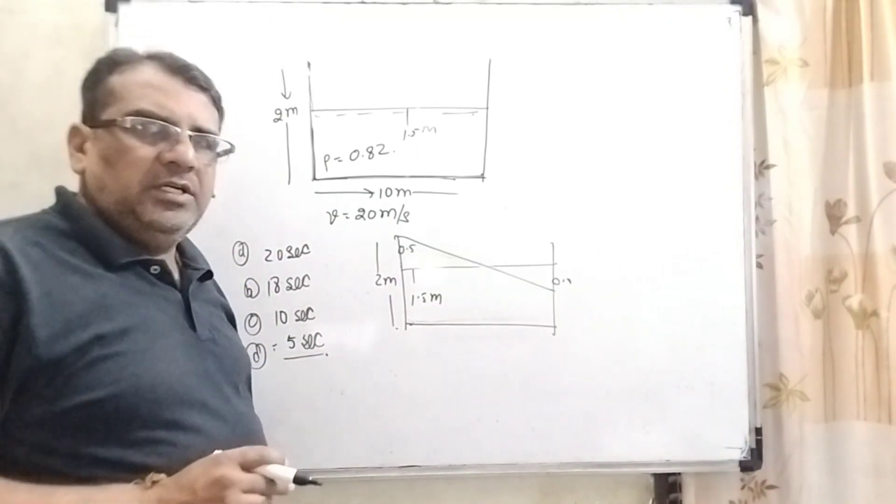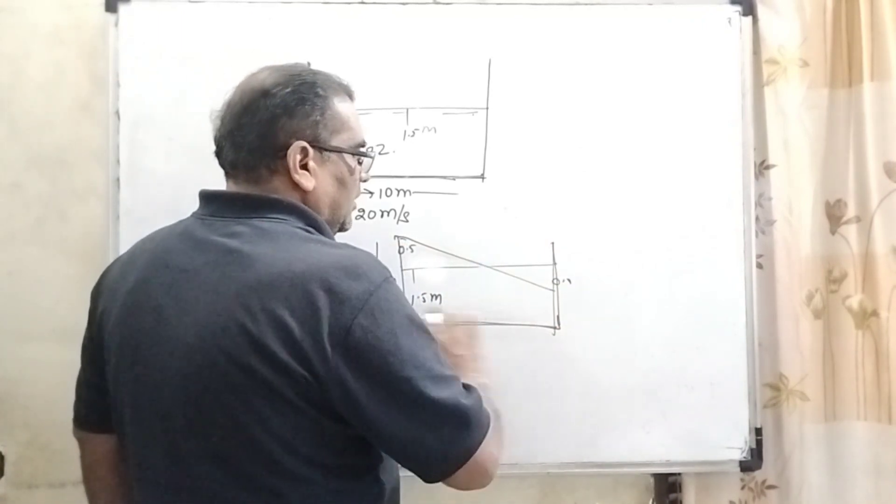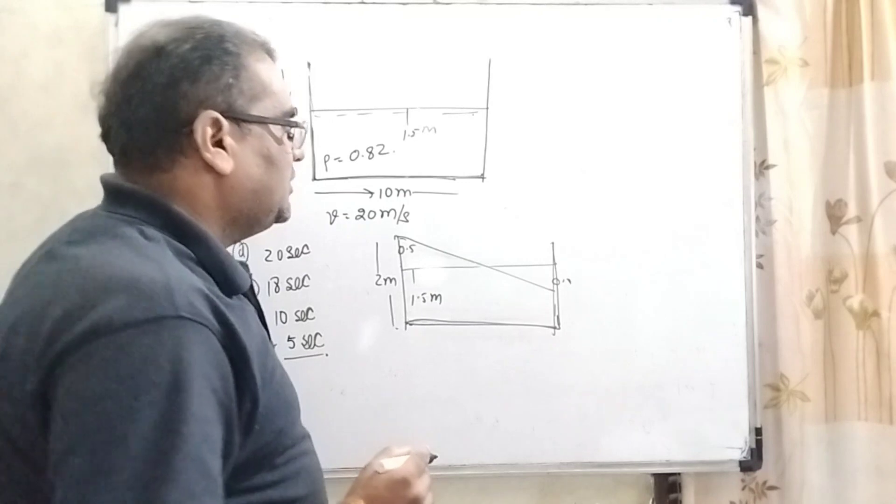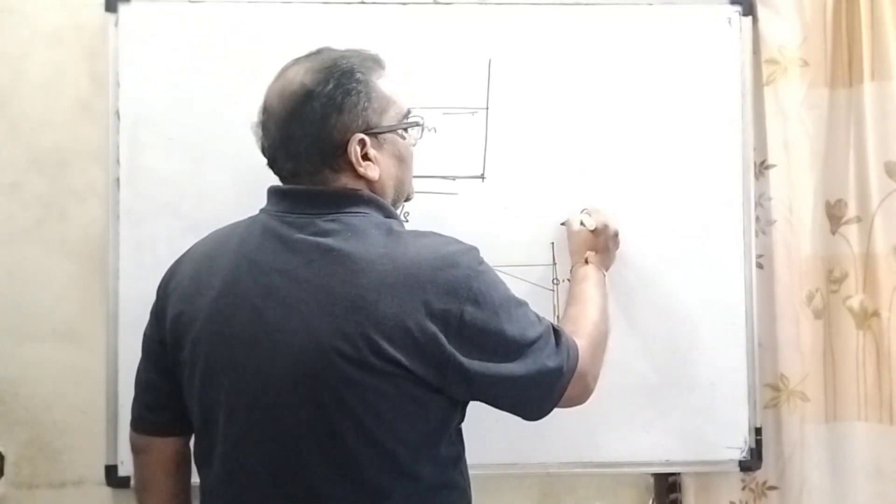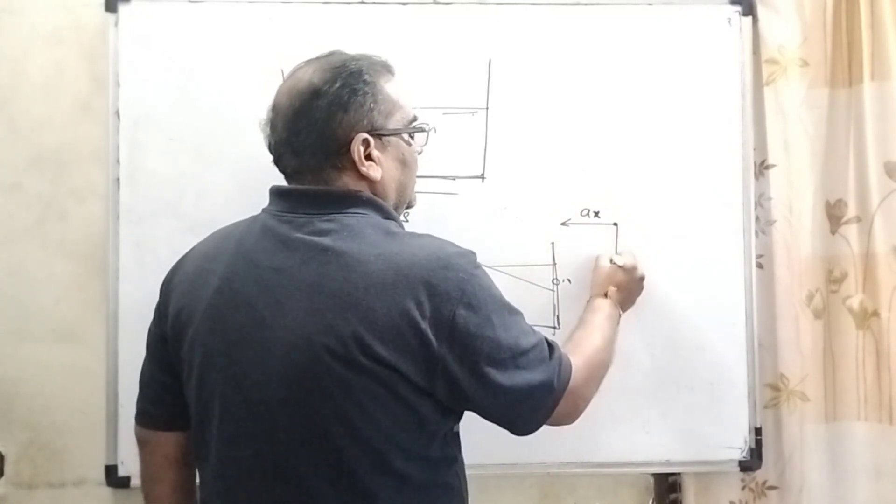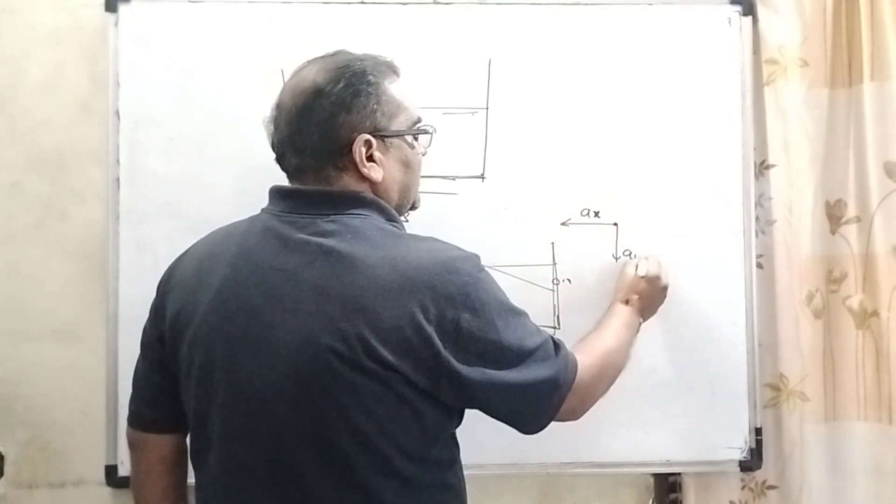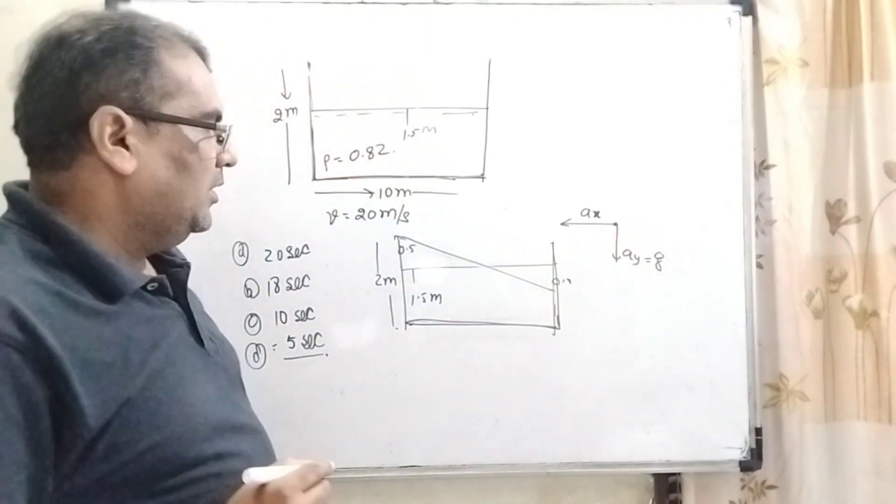We have to calculate the time where this oil is not spilling. And how is it possible? Because when this vessel is moved in forward direction, then pseudo acceleration is acting on it and its direction is backward. Let's say that is Ax and here Ay is acting downward direction. Here acceleration due to gravity that is Ay.